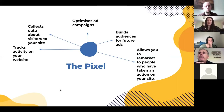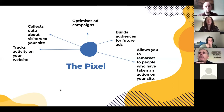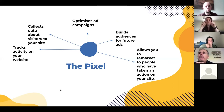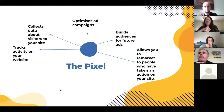Most companies have a Facebook pixel on their site, so every time a customer visits a website, that pixel tracks what they're doing — unless the person has an ad blocker. This is how it builds information: it sees they've purchased a barbecue, they really like garden centers. It collects all that data about visitors to your site, which helps you build a picture of your perfect customer. The pixel also optimizes ad campaigns and has gotten better and better over time.